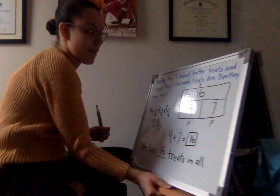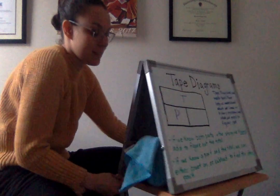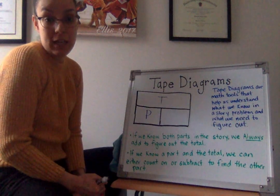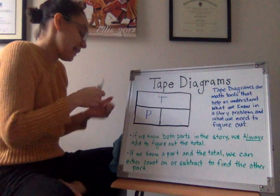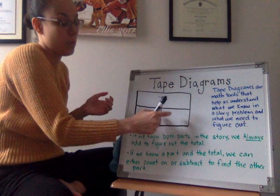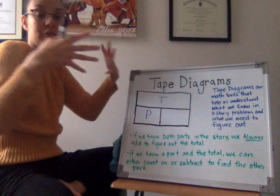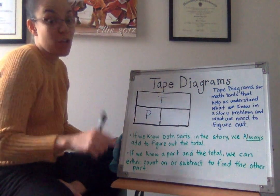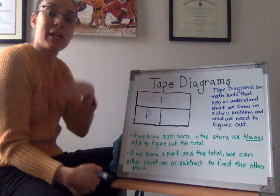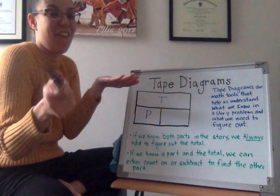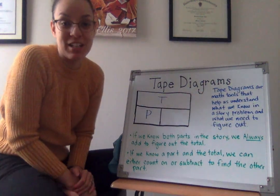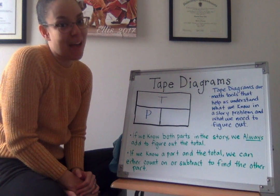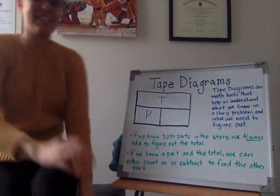So tape diagrams are very important because they help us understand what we need to figure out. And they help us to know that if we have two parts, we always have to add. If we have a total and a part, you can choose. We can either subtract or we can count on. You got it. So I can't wait to see how you guys are going to do with your tape diagrams this break. I'll be checking them as soon as we get back. See you soon, first grade. Love you guys. Bye.